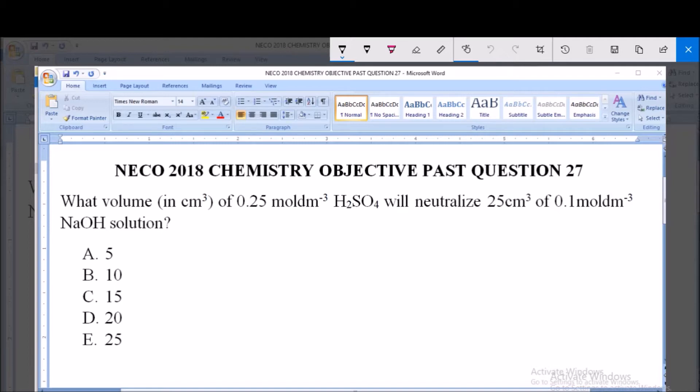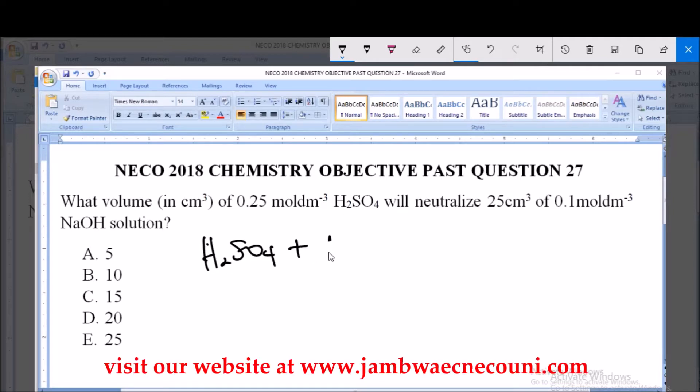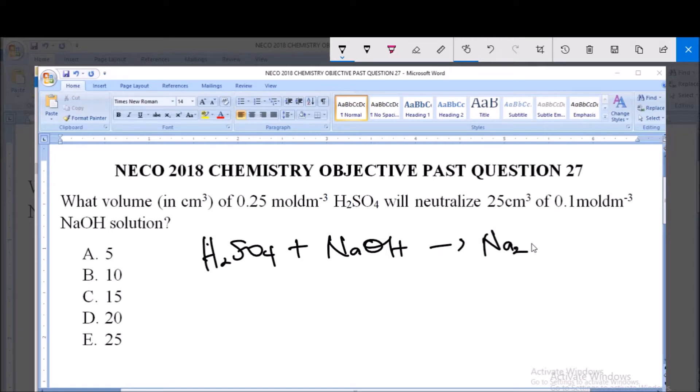Now let's briefly write down the equation of this reaction. We have H₂SO₄ plus sodium hydroxide, and this will give us sodium tetraoxosulfate VI salt plus water. Now let's balance this reaction.